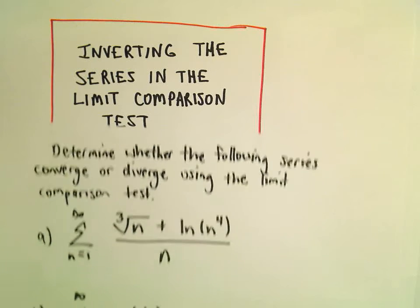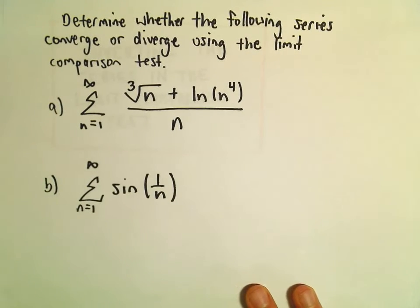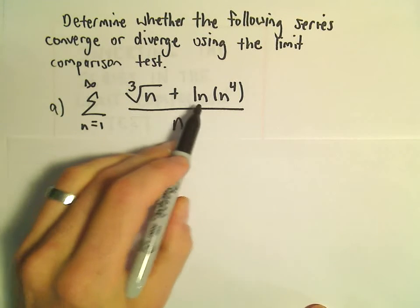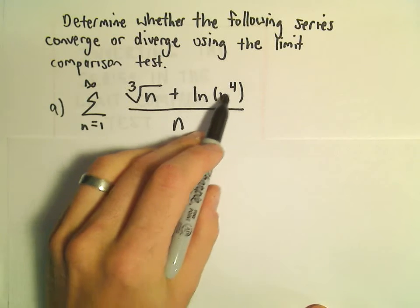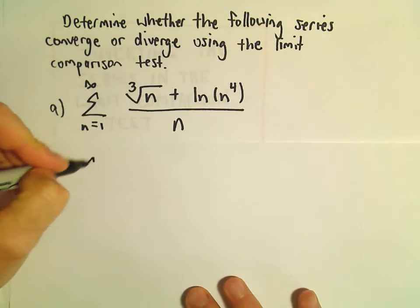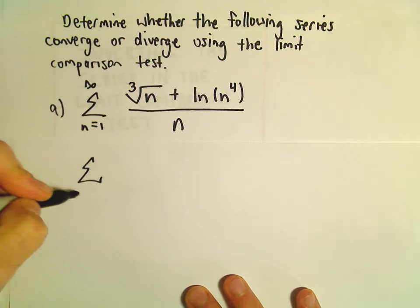Alright, in this video we're going to look at some more examples using the limit comparison test. And here in part A we've got the series from 1 to infinity, the cube root of n plus the natural logarithm of n to the 4th power all over n. And we want to decide whether this converges or diverges.